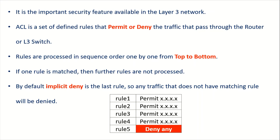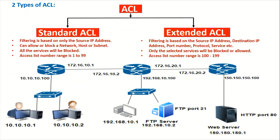This is how ACL works at a high level. There are two main types of ACL: Standard ACL and Extended ACL. Standard ACL is the very basic type — the reason being that filtering is based only on the source IP address. You can either block or allow traffic based only on the source IP address.